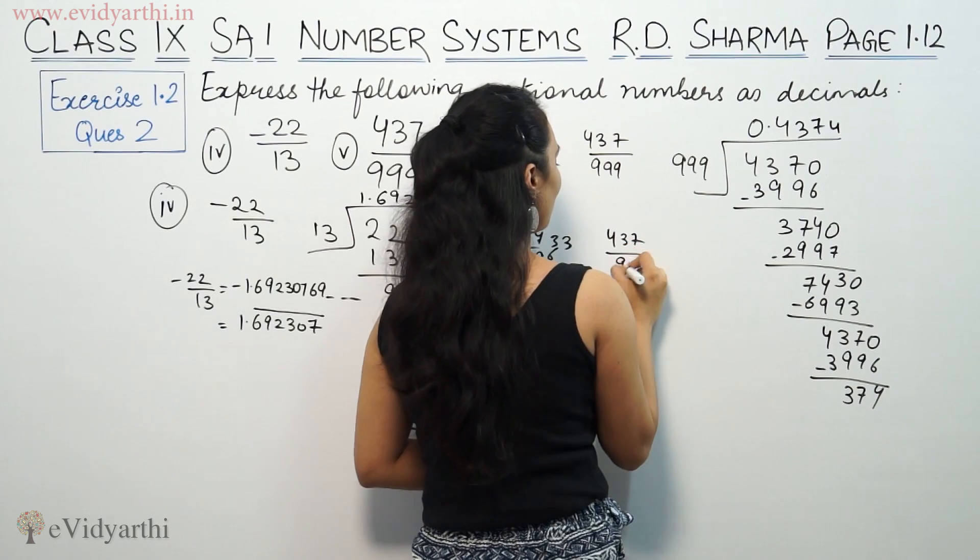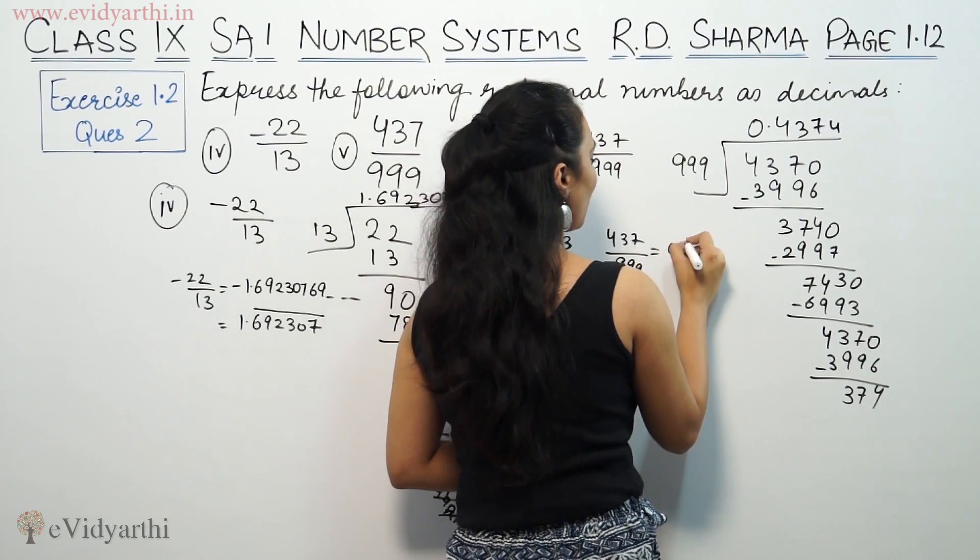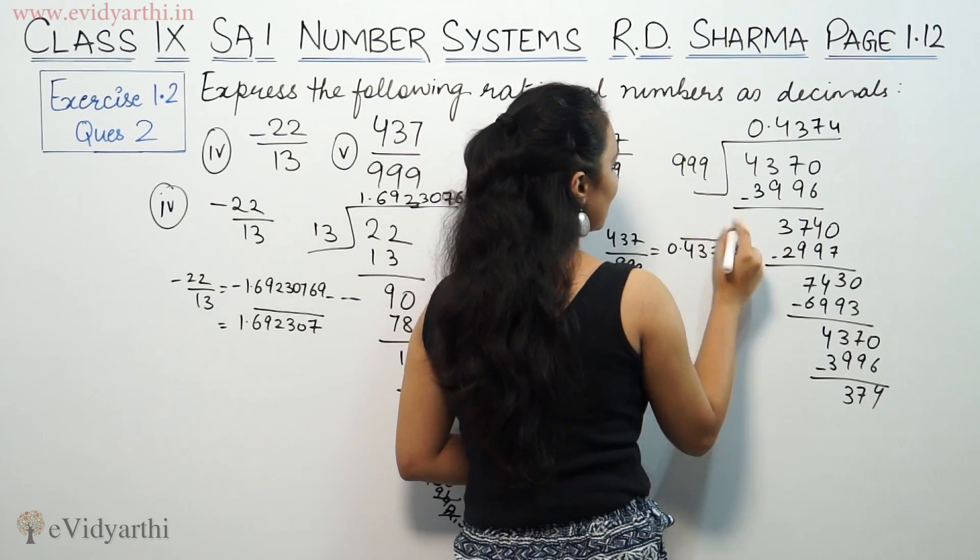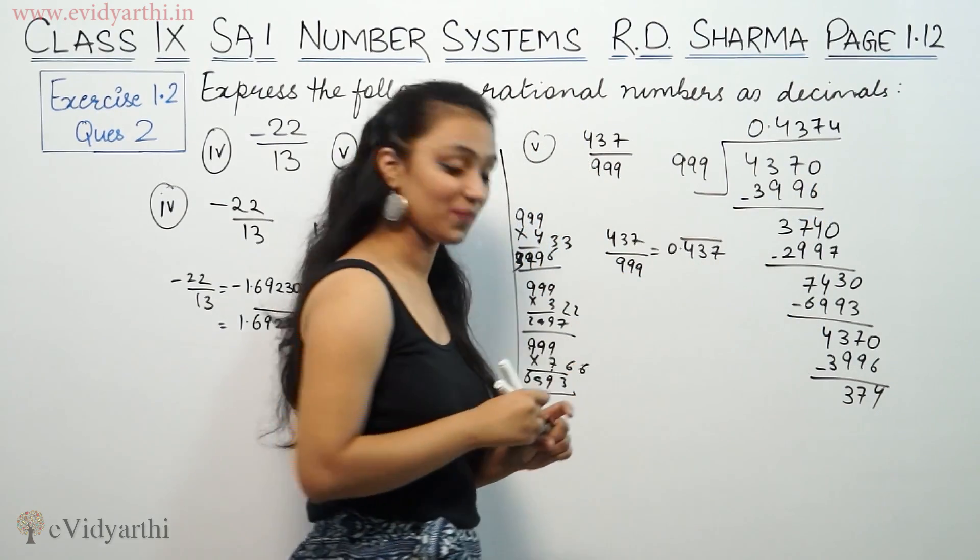That means 437 by 999 equals 0.437437437... with the three digits 4, 3, 7 repeating.